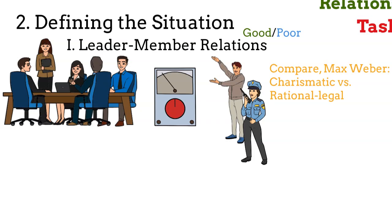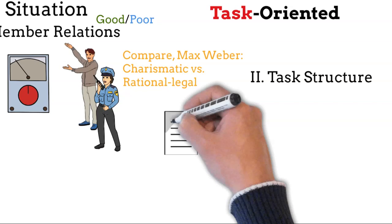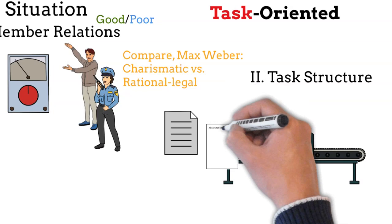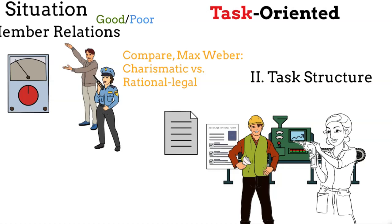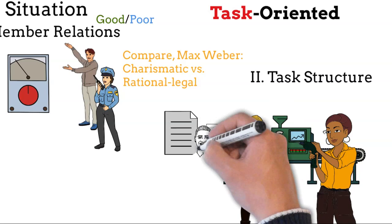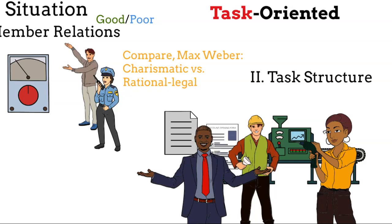The second dimension, task structure, is rather straightforward. In high task structure situations, the input, process, output, policies, job descriptions, and any other defining rules are well known. This means that it's very clear what needs to be done, when, how, and by whom. Low task structure requires more judgment, improvisation, and frequent decisions since many of the parameters needed to execute the task are unknown. The task structure of a situation can be assessed as low or high.